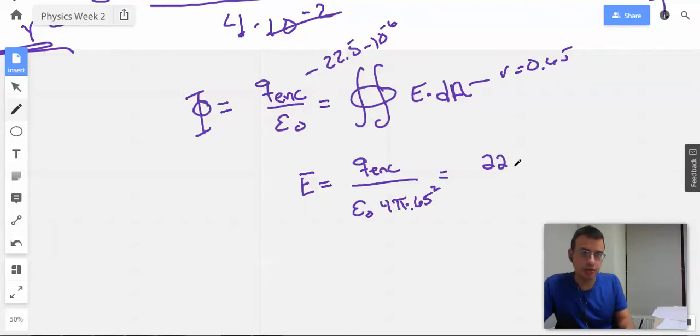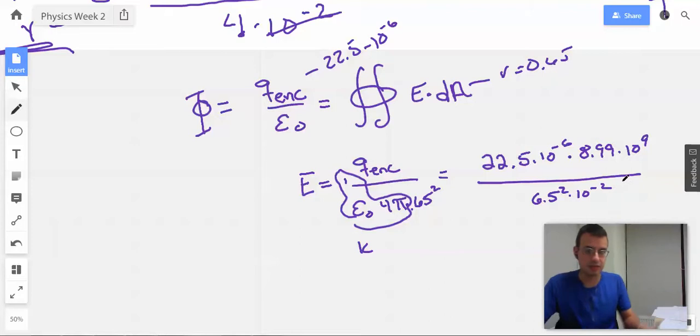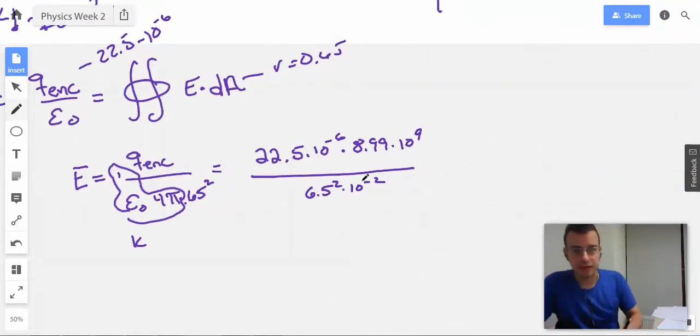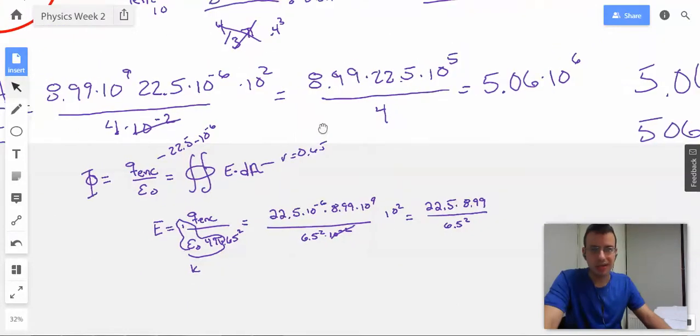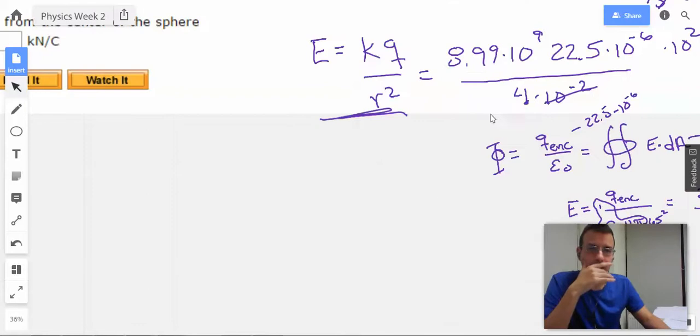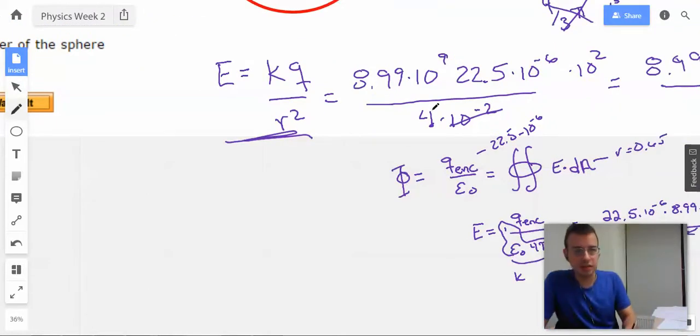Which will be 22.5 times 10 to the negative 6th. This here, I'm going to make a 1 up here, is k, 8.99 times 10 to the ninth, over r squared, which will be 6.5 squared times 10 to the negative 2nd. That's just math. Move this guy to the top. Move this over. So we have 22.5 times 8.99, all over 6.5 squared. Did I square this guy up here? Did I square this? I did not. Sorry, backtracking slightly. That guy's supposed to be squared.